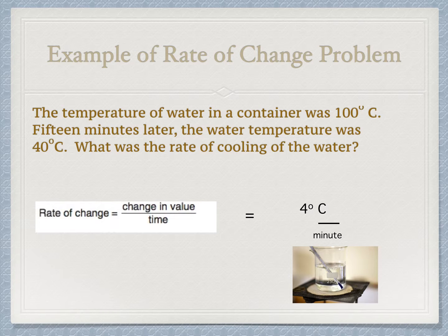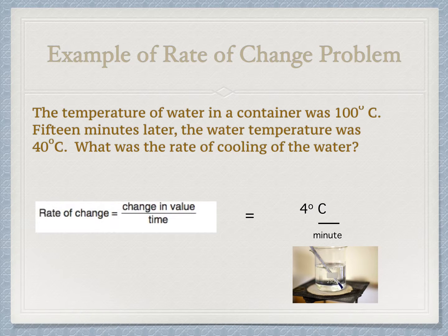The important thing for rate of change problems is that there are two units involved — it's a double unit kind of problem. If you just write 4 degrees Celsius, you're not fully correct. It's important to have the same units in your answer that you used when substituting in. So 4 degrees Celsius per minute is the best way to write it, and we'll keep talking about this in later problems.